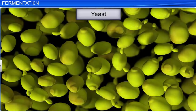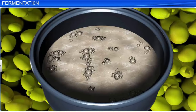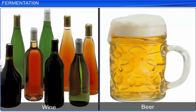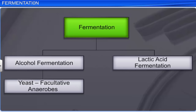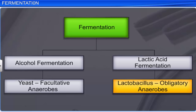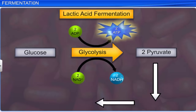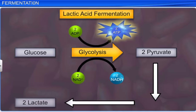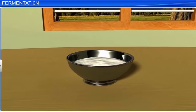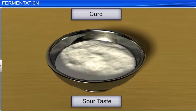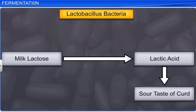Yeast is widely used in the production of alcohol beverages like wine and beer, and to bake bread. The fermentation of lactic acid is carried out by bacteria like Lactobacillus, which are obligatory anaerobes. In them, pyruvic acid is reduced to lactic acid or lactate. The NADH formed in the glycolysis process is reoxidized to NAD+ by alcohol dehydrogenase, to be reused in the glycolysis process. For example, curd has a sour taste due to the presence of lactate formed by Lactobacillus in fermentation.